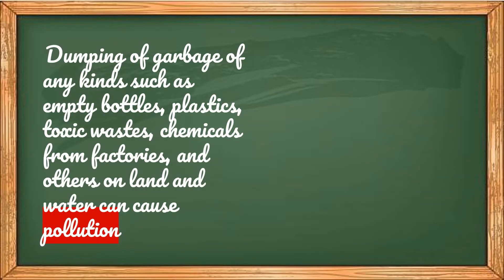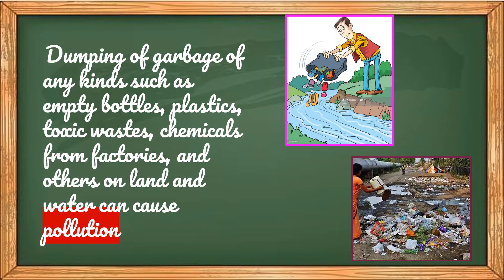Dumping of garbage of any kinds such as empty bottles, plastics, toxic waste, chemicals from factories, and others on land and water can cause pollution. When the soil or land is dumped with garbage of any kind, the soil or land becomes polluted. Polluted land serves as breeding places for flies, cockroaches, and rats. These pests carry germs that cause diseases, hence hazardous to one's health.